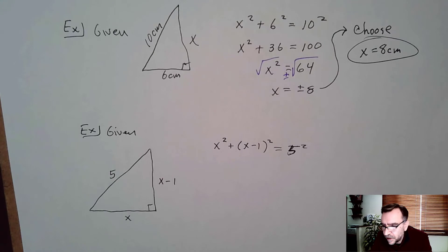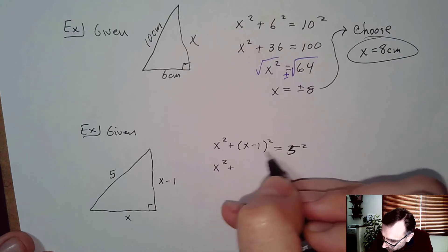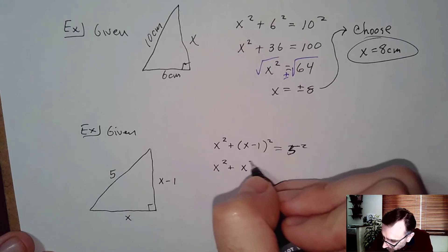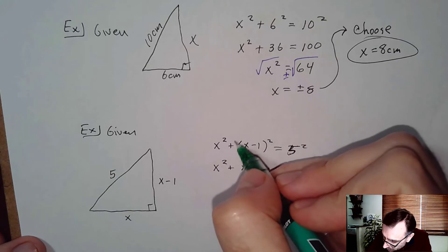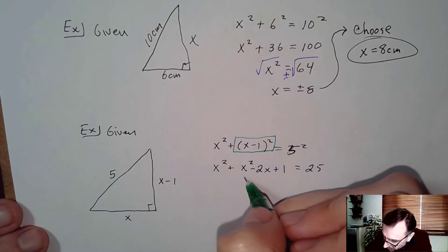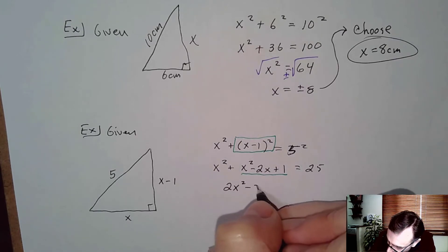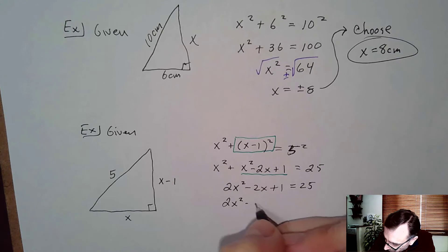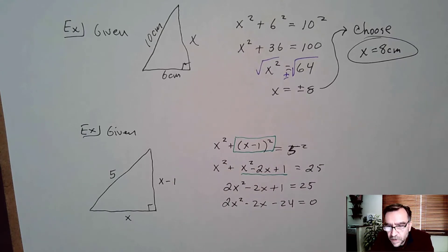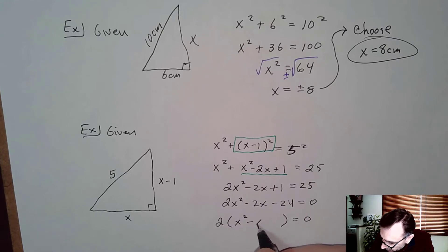There's going to be some algebra in this class so let's get used to it. We know it's going to be a quadratic. Distributing (x minus 1) squared gives x squared minus 2x plus 1, so we have x squared plus x squared minus 2x plus 1 equals 25. Combining like terms: 2x squared minus 2x plus 1 equals 25. Subtracting 25 gives 2x squared minus 2x minus 24 equals 0. This has a GCF, so factoring out 2 leaves x squared minus x minus 12.